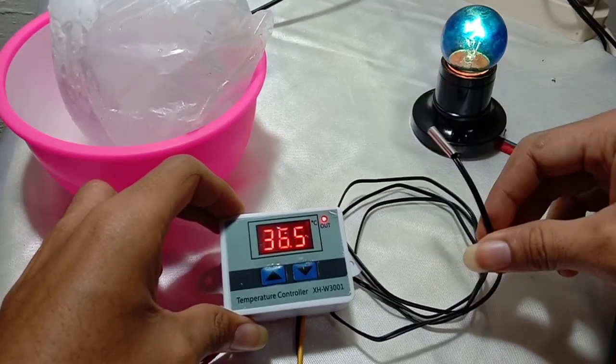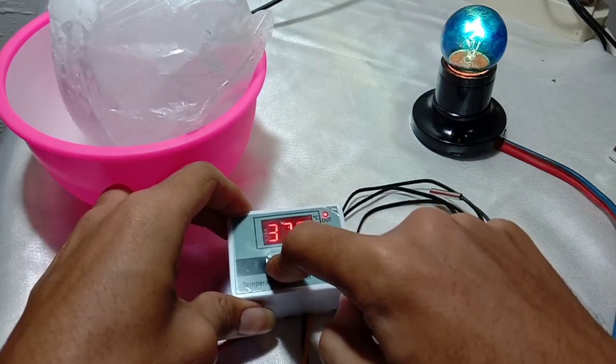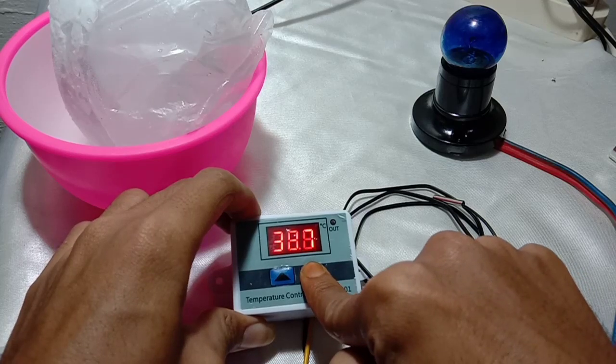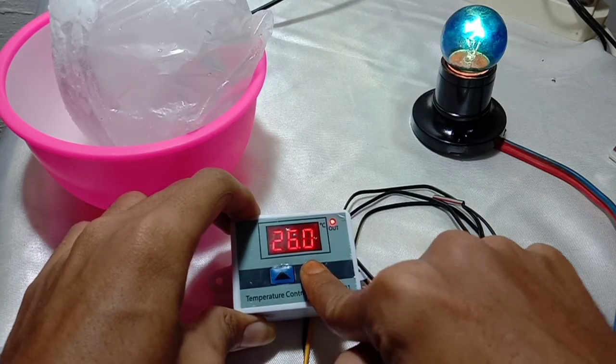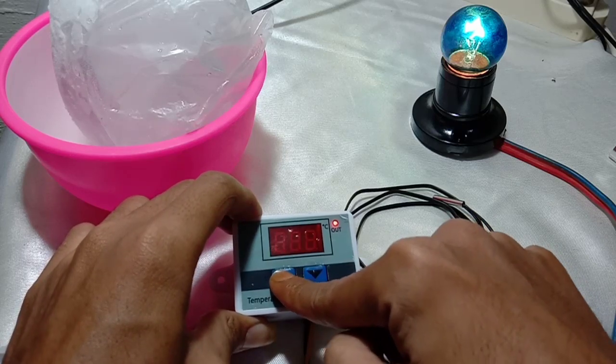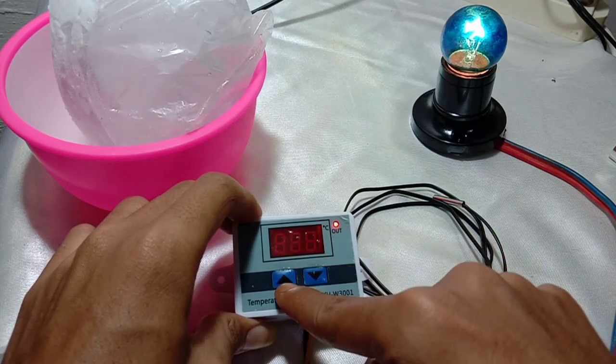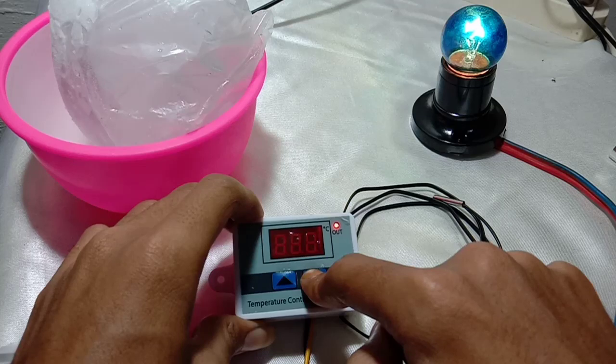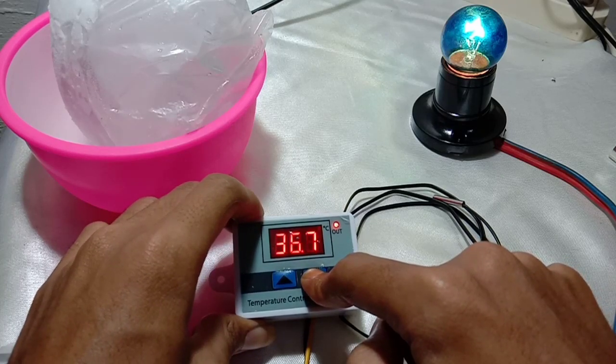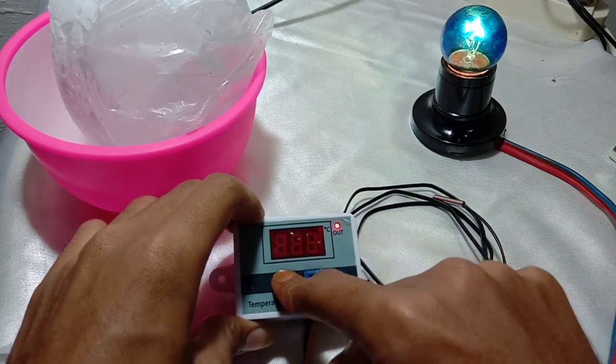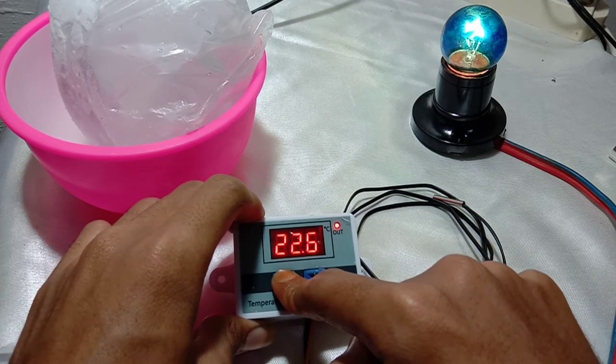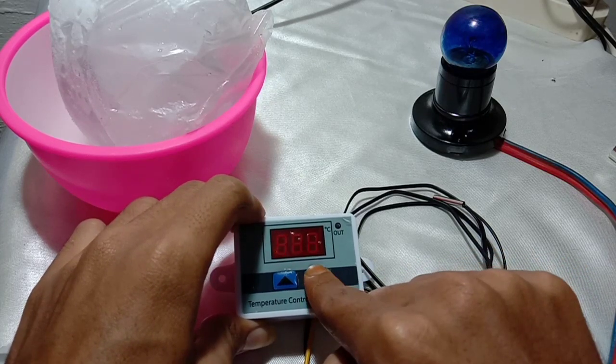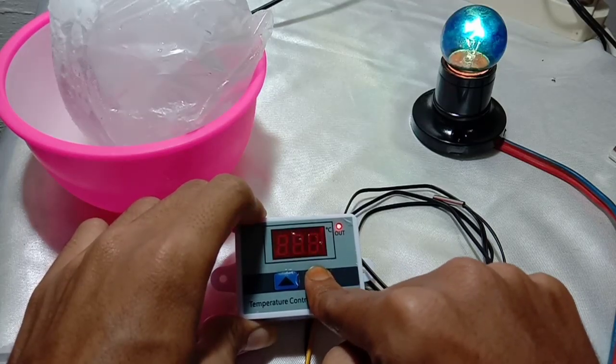Now if we use it for cooling, we set here to become 26.5. So we put the first one at 26.5 and then the second one is lower than 26.5, I set it at 25.5.